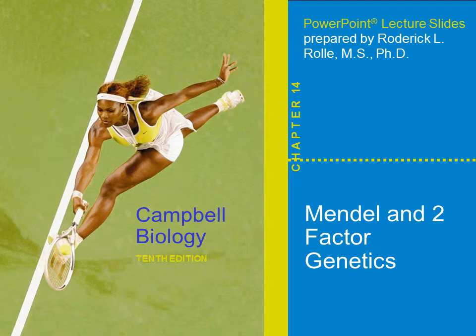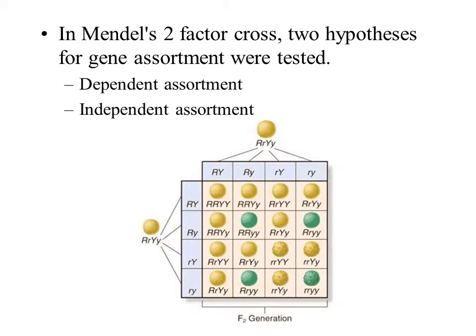Hello, my name is Dr. Roderick L. Rohl, and today I will be talking to you about Mendel and two-factor genetics. Mendel looked at two-factor genetics. In two-factor genetics, he proposed two hypotheses: one was that dependent assortment took place, and the other was that independent assortment took place.